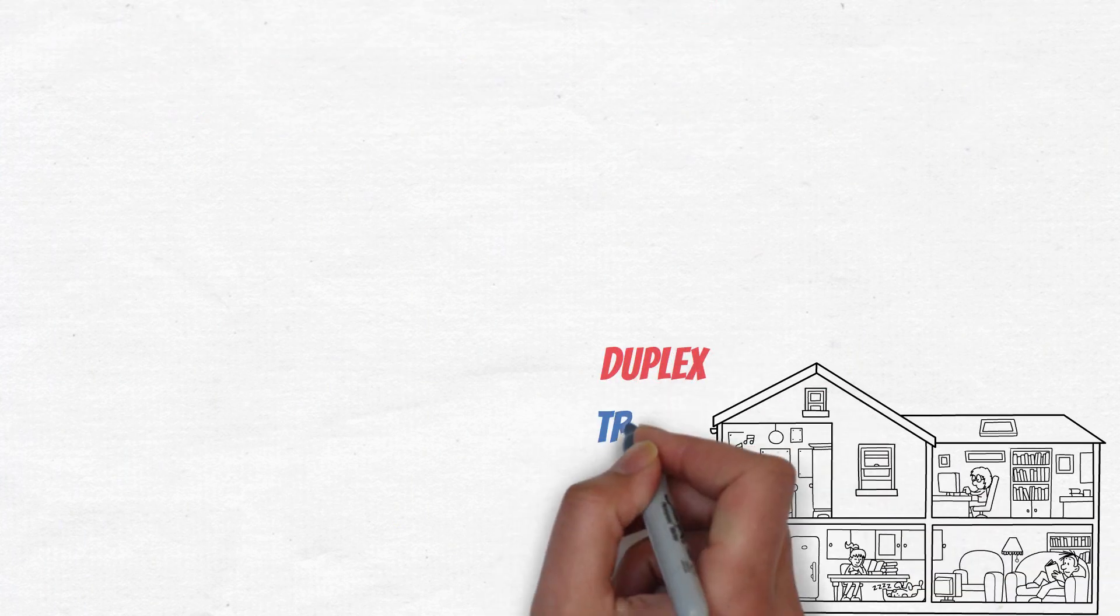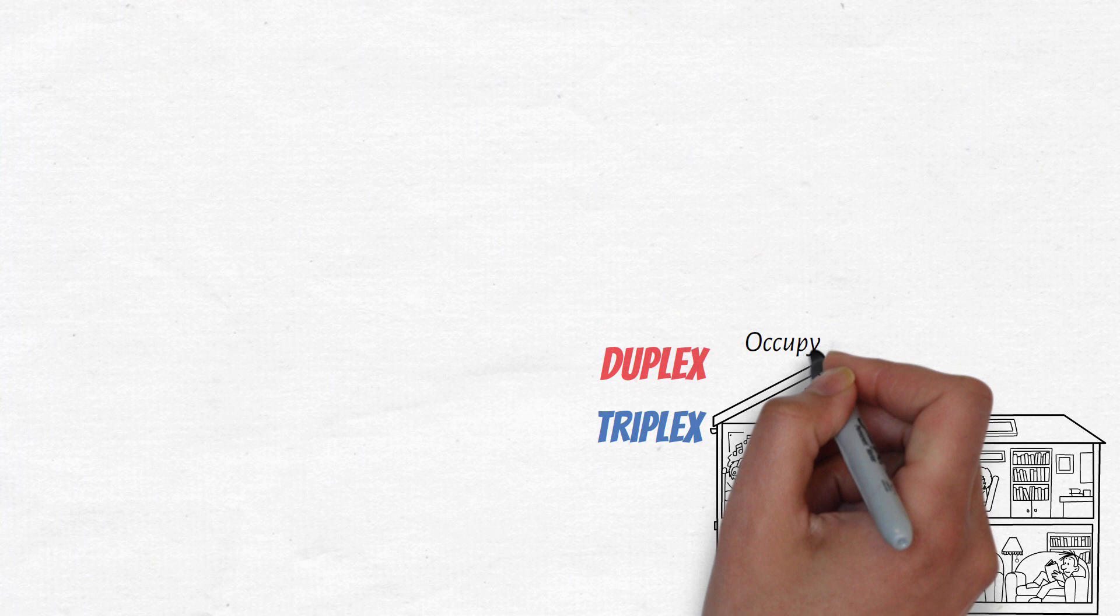The most usual scenario is to own a multifamily home, such as a duplex or triplex, occupy one unit, and rent the other.